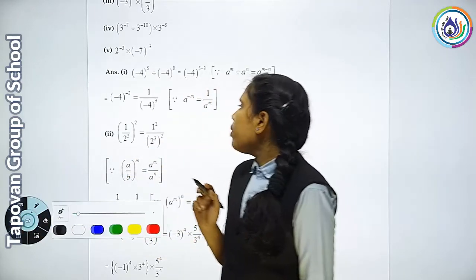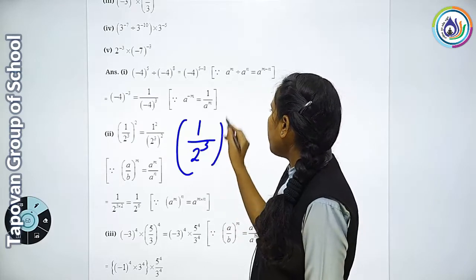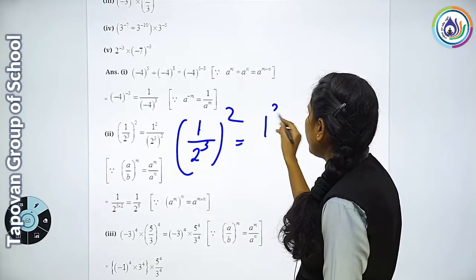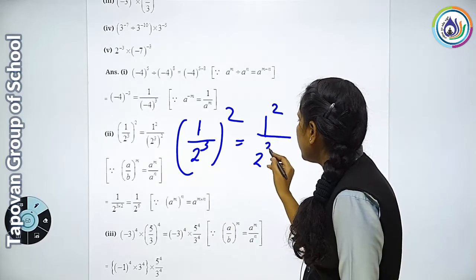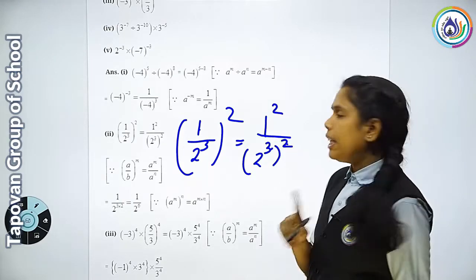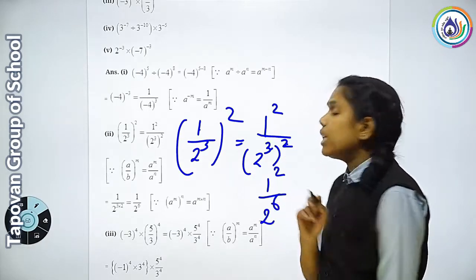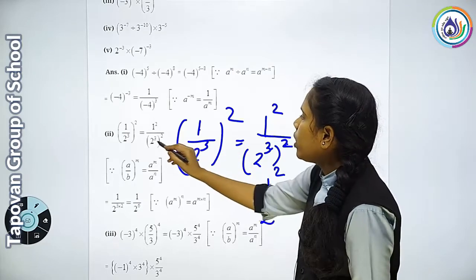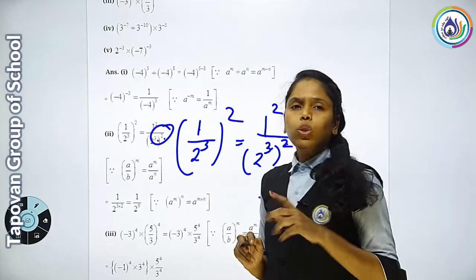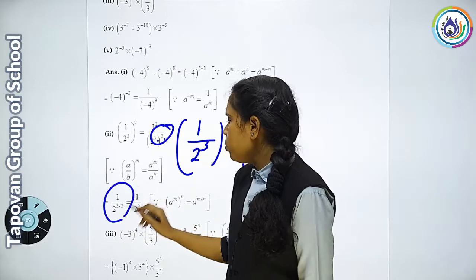Second number. Yahan 1 two raise to 3, iski puri whole power 2. To 1 ki power square hogi, woh kuch bhi nahi hoga. To 1 ka square — aur niche to already 2 hai, to 3 ko isme lane do, phir bracket karo. Ab indonho ke beech mein multiply hoga. Yaani 1 ka square to 1, aur 3 two is 6 — yaani 2 ki power kitni ho gayi? Six. Jab aise power hogi to aap multiply kar sakti ho — multiply mein aapko addition karna hai. To raise to six. Yahan answer kitna ho gaya? 2 raise to 6.